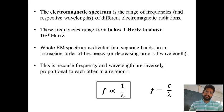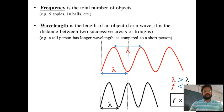So first of all let us understand what is frequency and what is wavelength in a simpler manner. Frequency is the total number of objects. It is just a number that is 5 apples, 10 balls, 30 bats etc. So it is just a number.